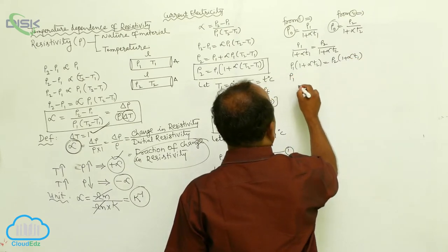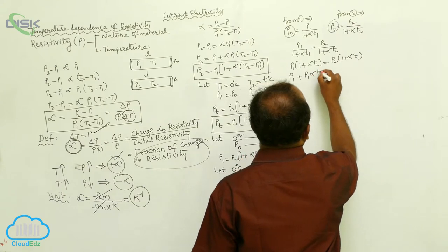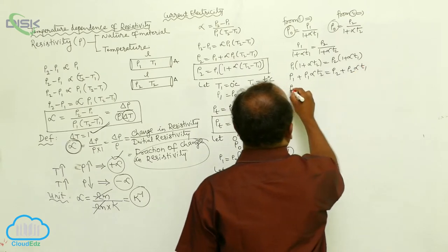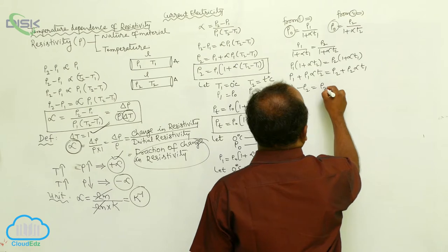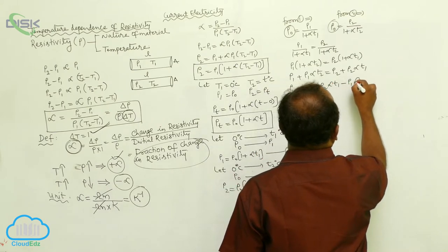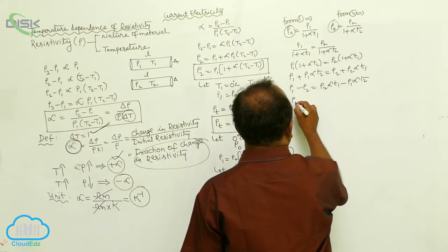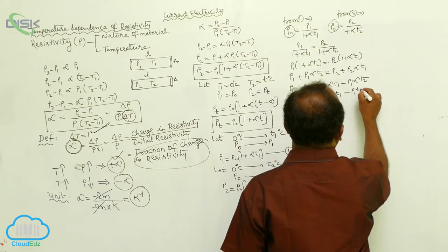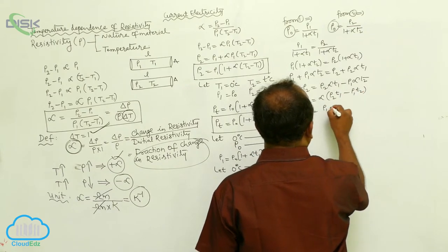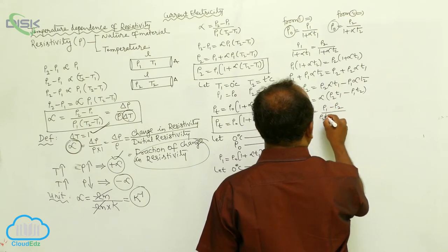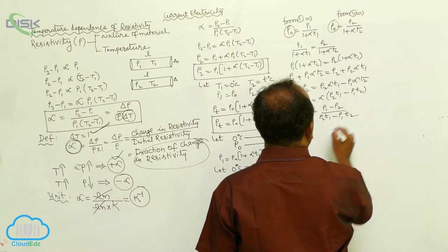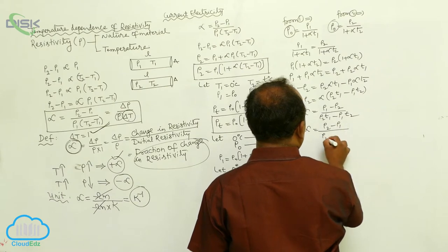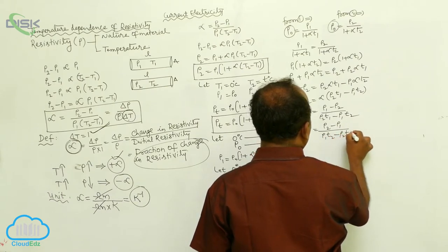On multiplication: ρ₁ + ρ₁·α·T₂ = ρ₂ + ρ₂·α·T₁. Therefore, ρ₁ - ρ₂ = ρ₂·α·T₁ - ρ₁·α·T₂. Taking alpha as common: ρ₁ - ρ₂ = α(ρ₂·T₁ - ρ₁·T₂). On simplification, α = (ρ₂ - ρ₁) / (ρ₁·T₂ - ρ₂·T₁).